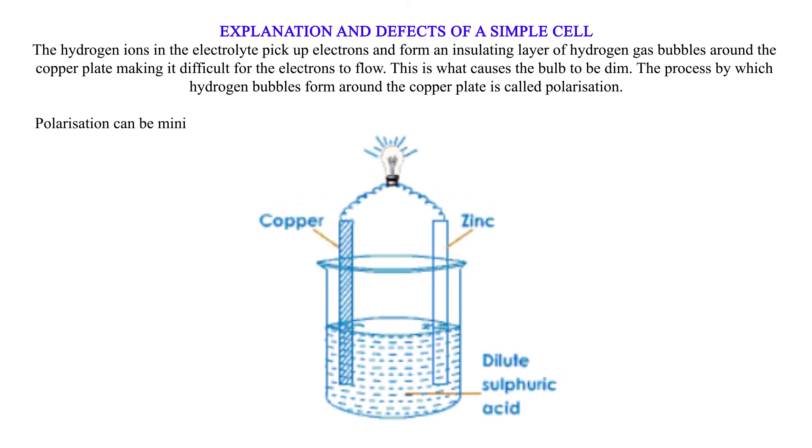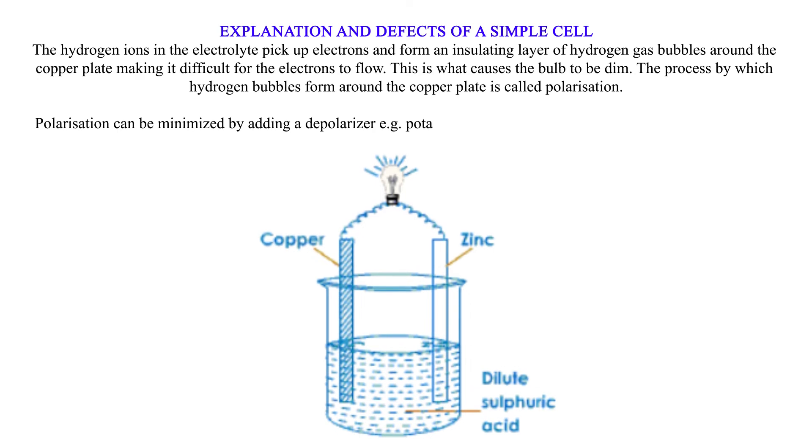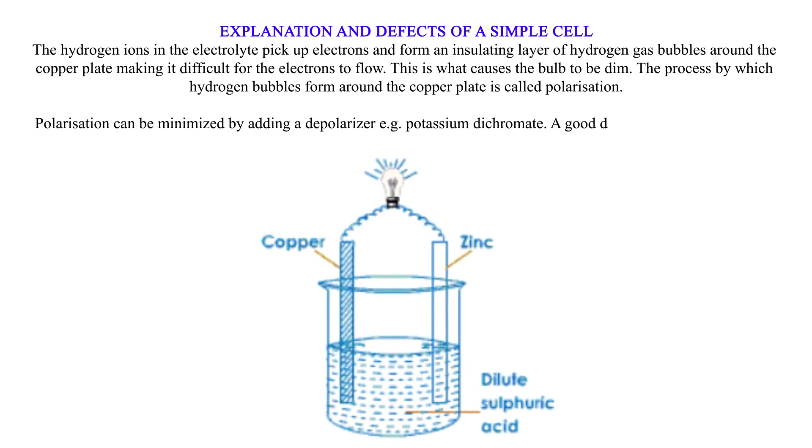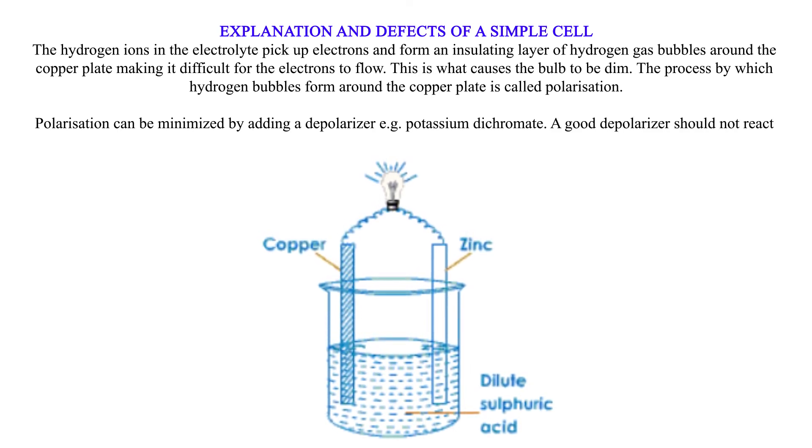Polarization can be minimized by adding a depolarizer, e.g., potassium dichromate. A good depolarizer should not react with the electrolyte.